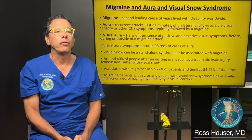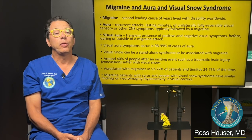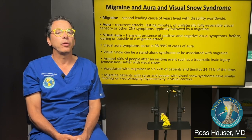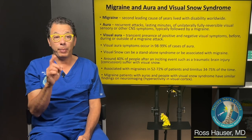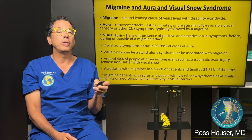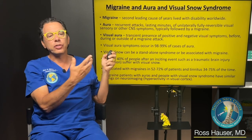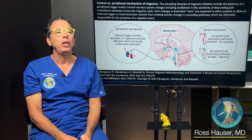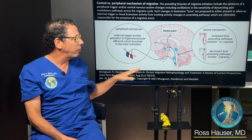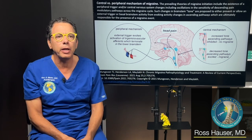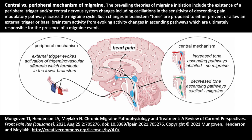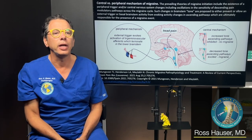Visual snow is associated with migraines in 52 to 70 percent of patients and with tinnitus 34 to 75 percent of the time. Migraine patients with aura and people with visual snow syndrome have similar findings on neuroimaging — hyperactivity in the visual cortex, probably from vasodilation of blood flow to those regions. External triggers evoke activation of the trigeminovascular afferent system — something triggers the trigeminal nerve to affect the vasculature in the brain. That's a key component.